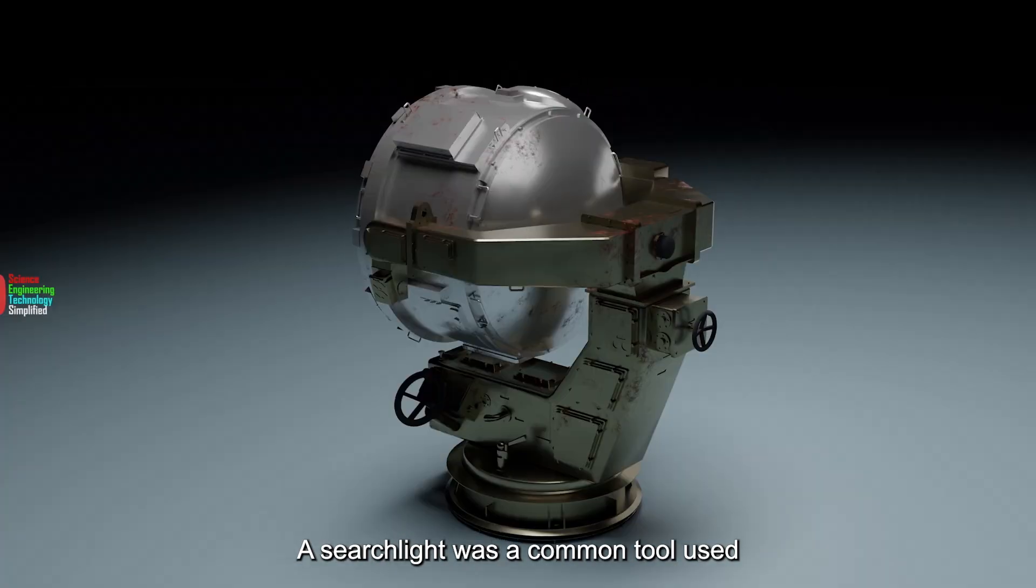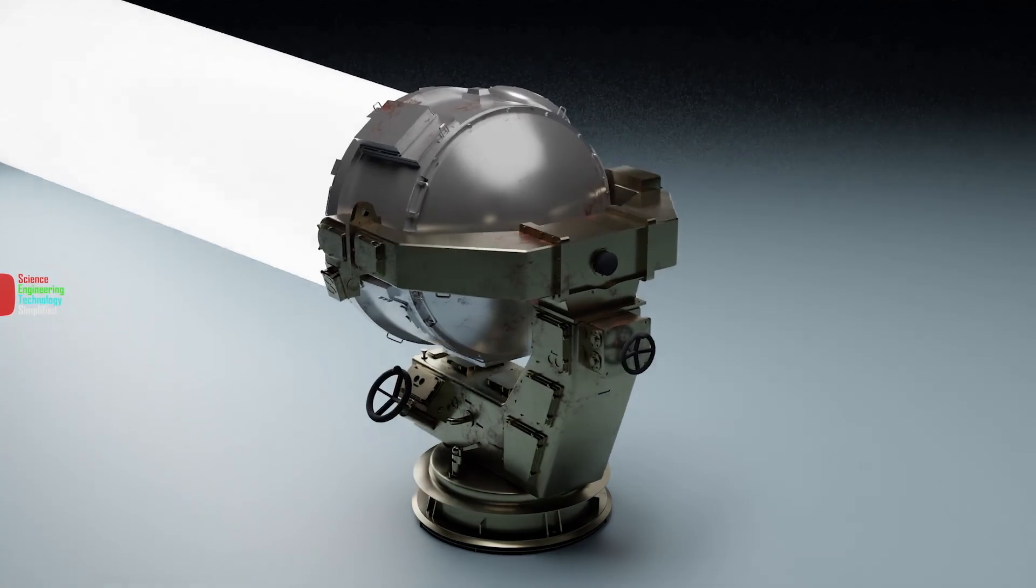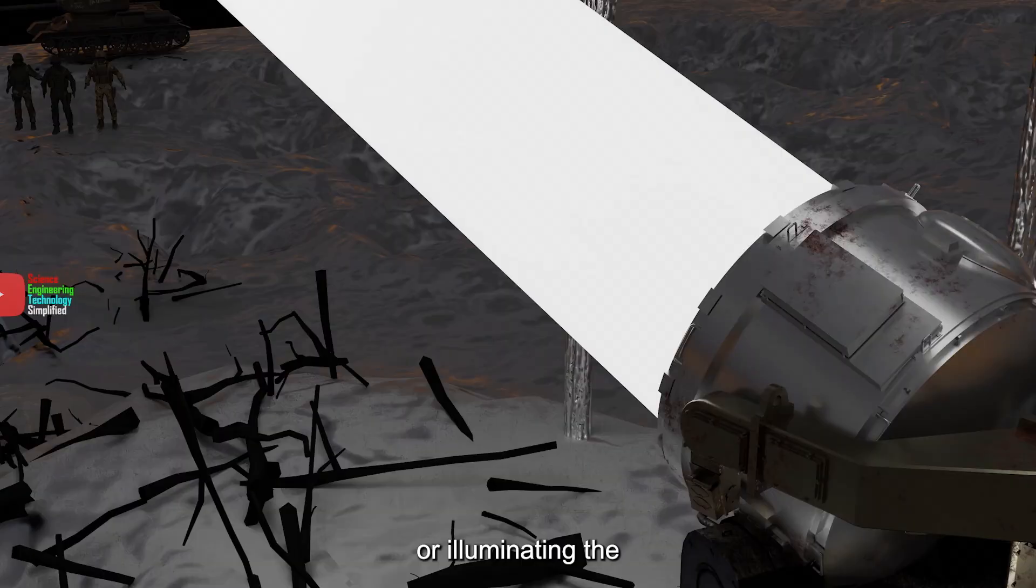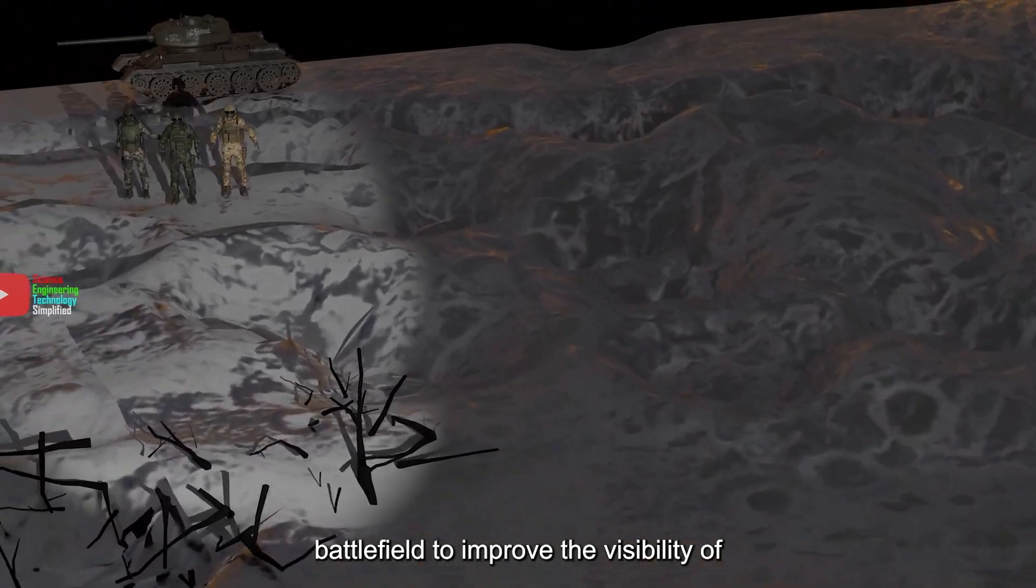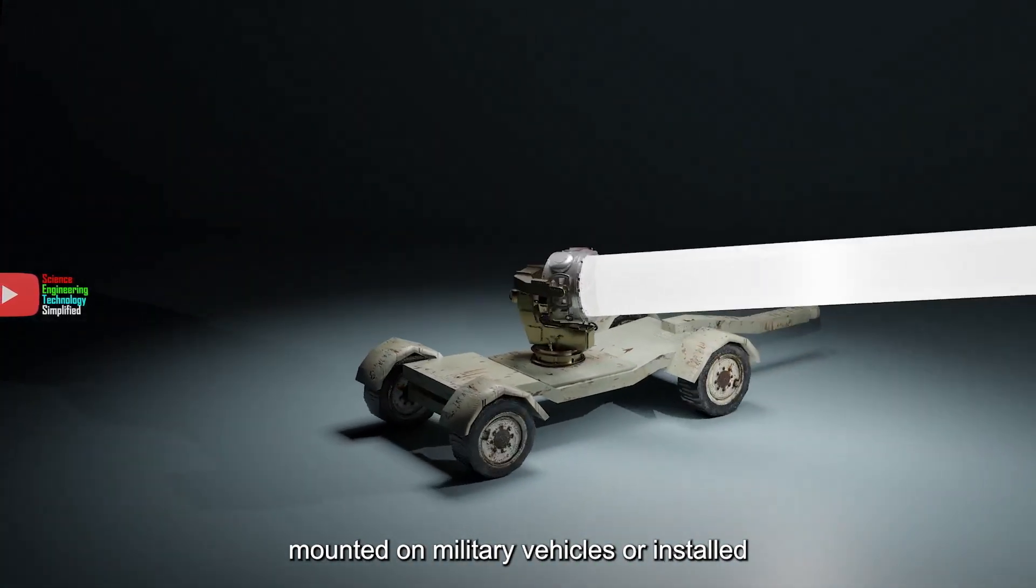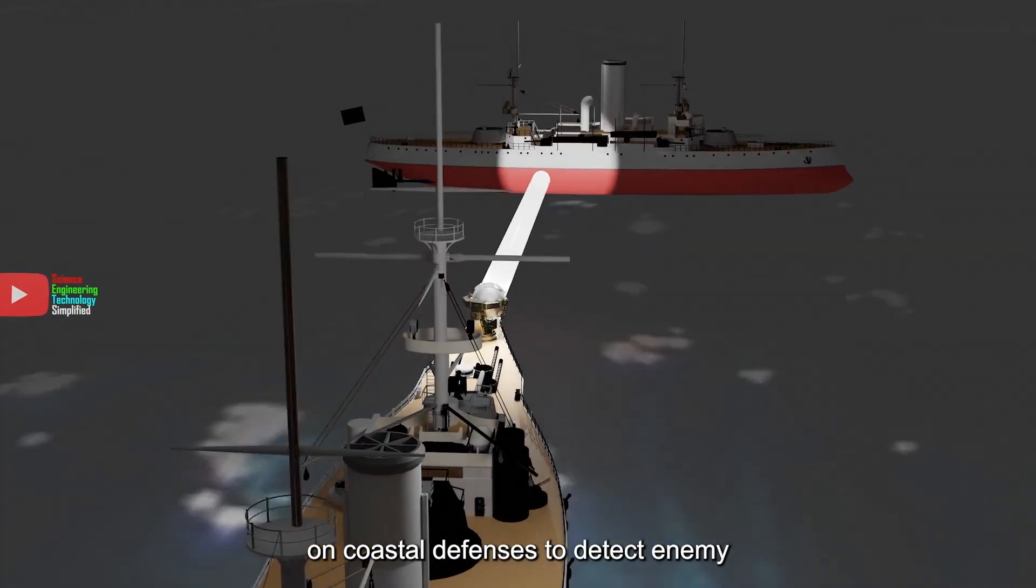A searchlight was a common tool used during World War II for various purposes, such as illuminating the night sky to spot enemy aircraft, or illuminating the battlefield to improve the visibility of soldiers. Searchlights were typically mounted on military vehicles or installed on coastal defenses to detect enemy ships.